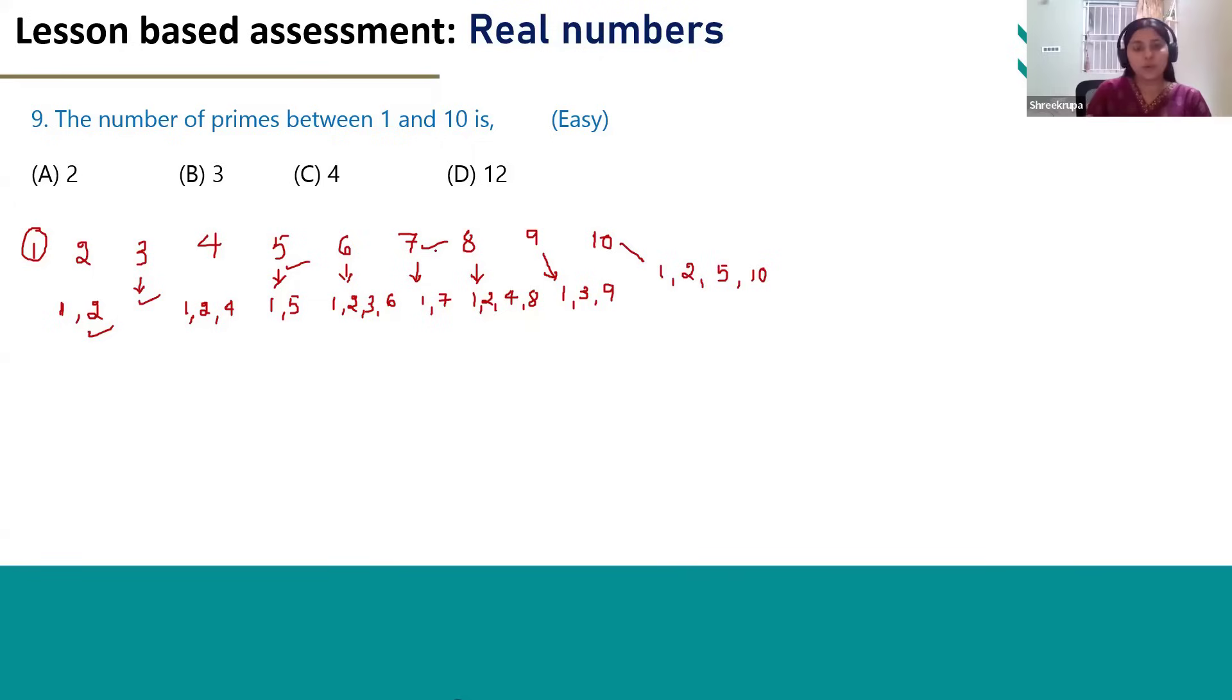So totally we will get 4 prime numbers in between 1 and 10. So the correct answer is 4. Option C is the correct answer.